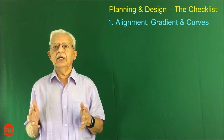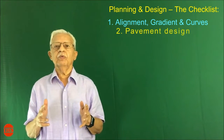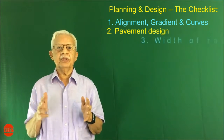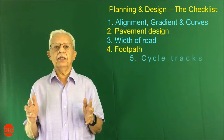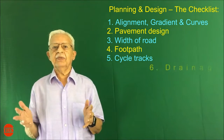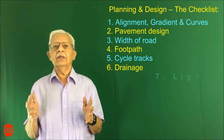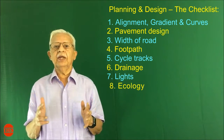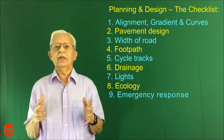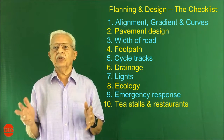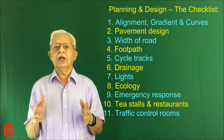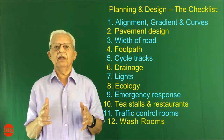Planning and Design Checklist: 1. Alignment, gradient and curves. 2. Pavement Design. 3. Width of Road. 4. Footpath. 5. Cycle Tracks. 6. Drainage. 7. Lights. 8. Ecology. 9. Emergency Response. 10. Tea Stalls and Restaurants. 11. Traffic Control Rooms. 12. Washrooms.